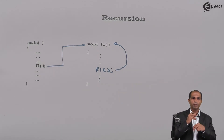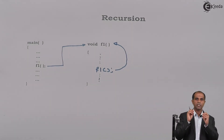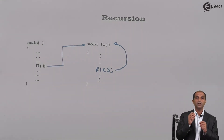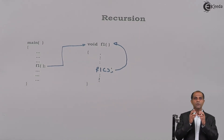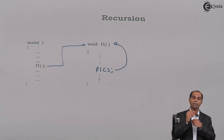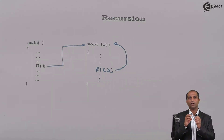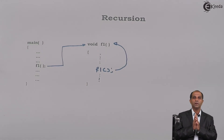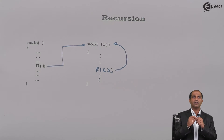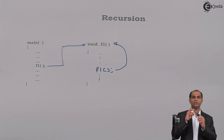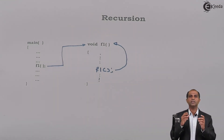We call this the base case condition. Can recursion be used to repeat a set of instructions? Yes — we have heard the same definition in iterations. In iterations, a set of instructions are repeated again and again. So recursion can be treated as an alternate of any looping structure used for iterations: while, for, or do-while. You can redo any of those examples using recursion.